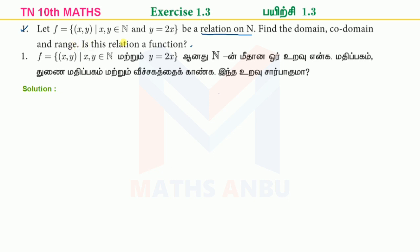First, x and y belong to natural numbers. Natural numbers are 1, 2, 3, 4 and so on to infinity. So x and y are two natural numbers. Here we find the y value using y equal to 2x. The x values are natural numbers: 1, 2, 3, 4 and so on.